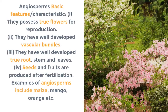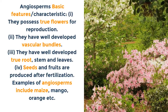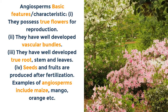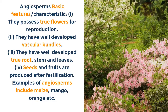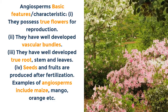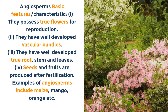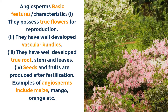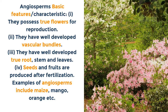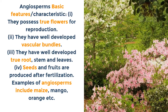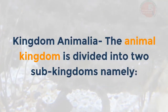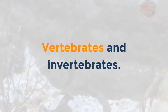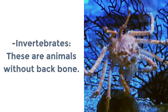Angiosperms — basic features: i. They possess true flowers for reproduction. ii. They have well-developed vascular bundles. iii. They have well-developed true roots, stems and leaves. iv. Seeds and fruits are produced after fertilization. Examples of angiosperms include maize, mango, orange, etc.